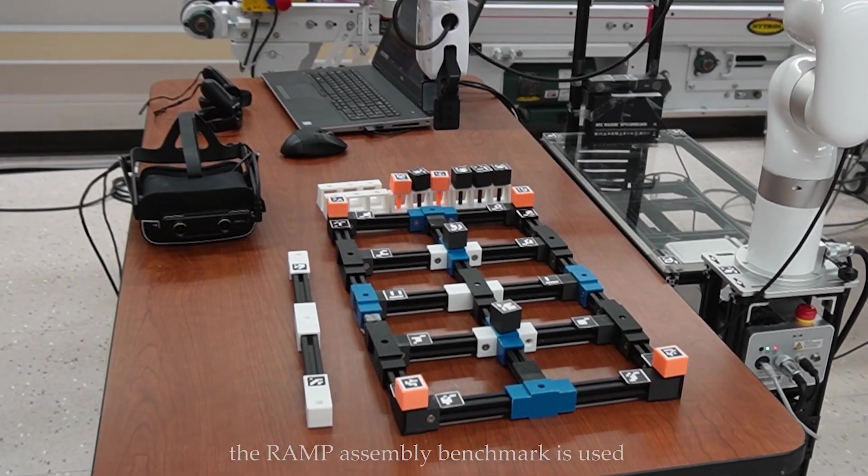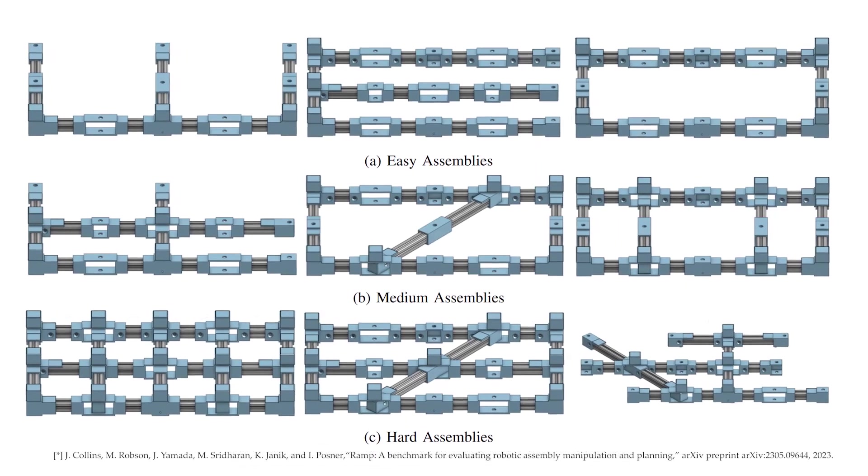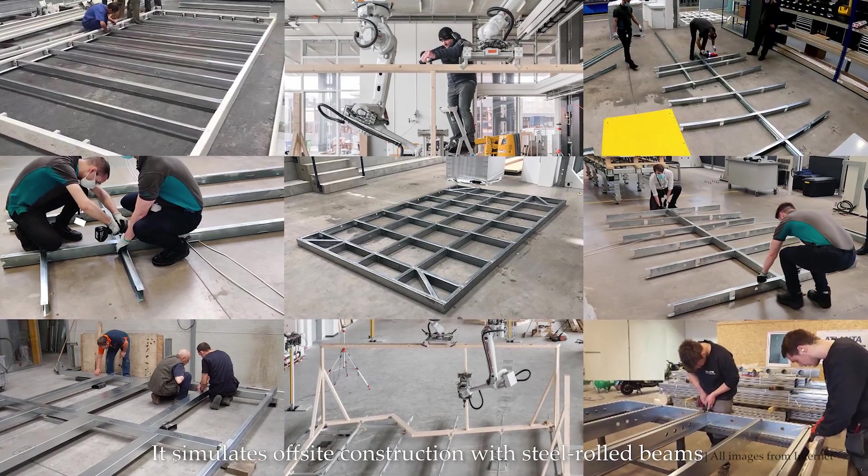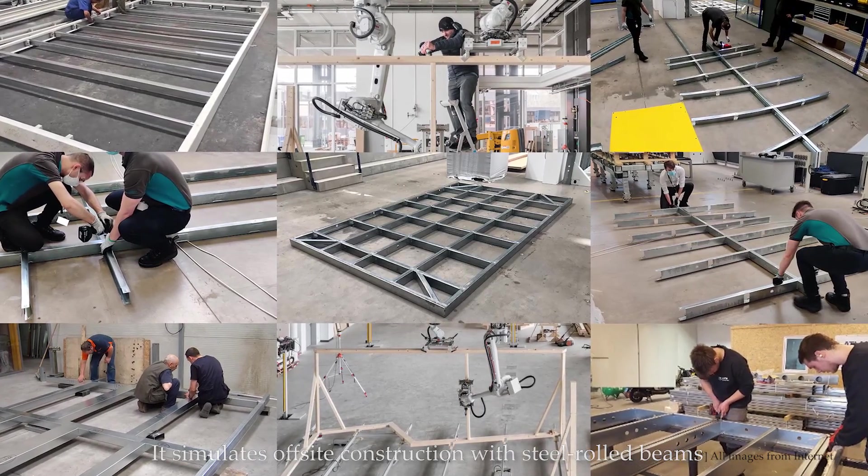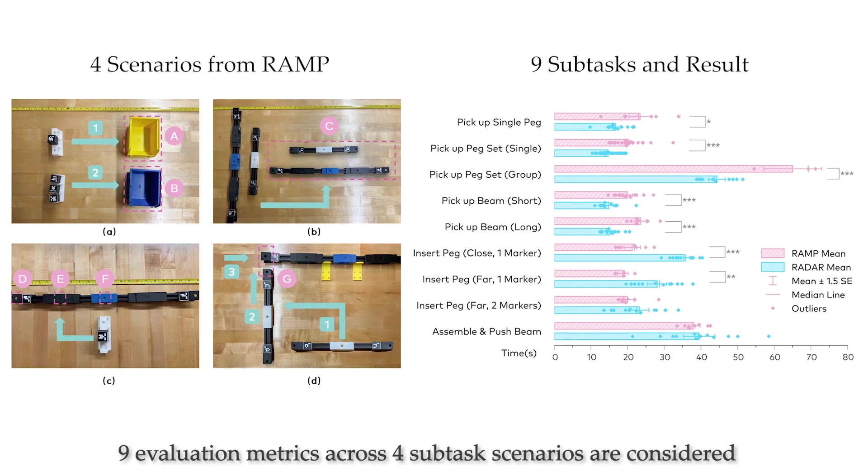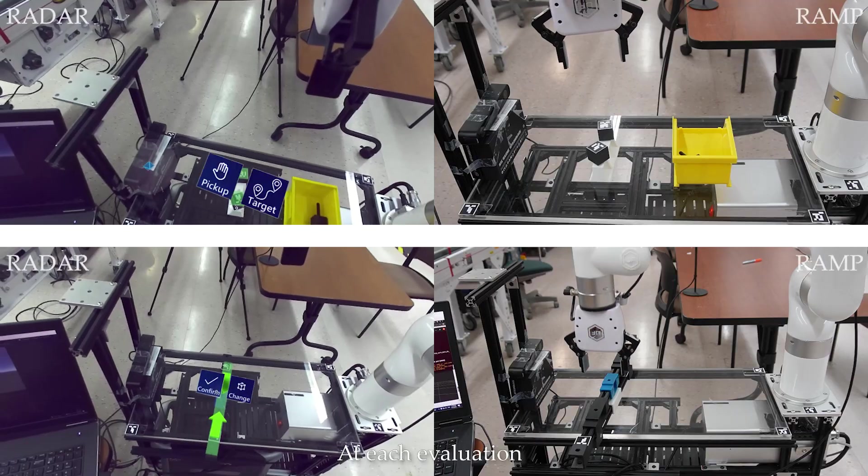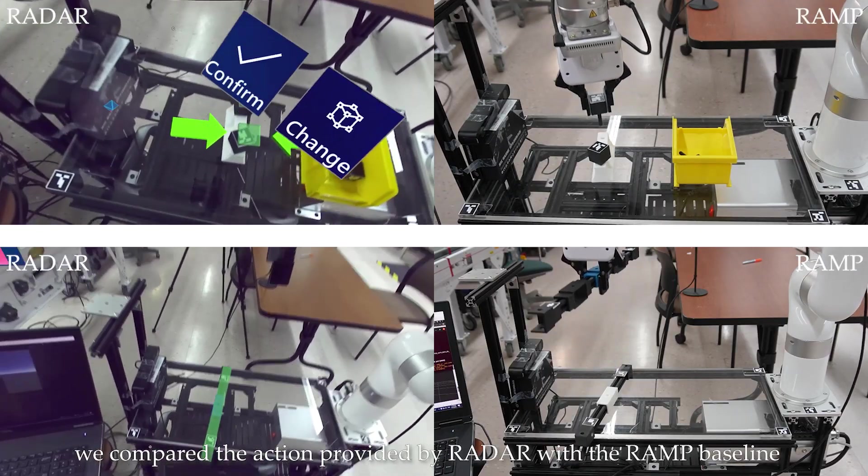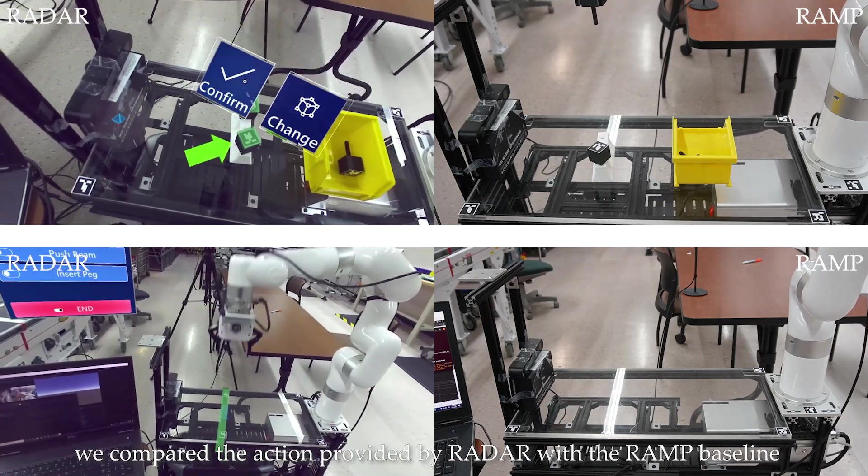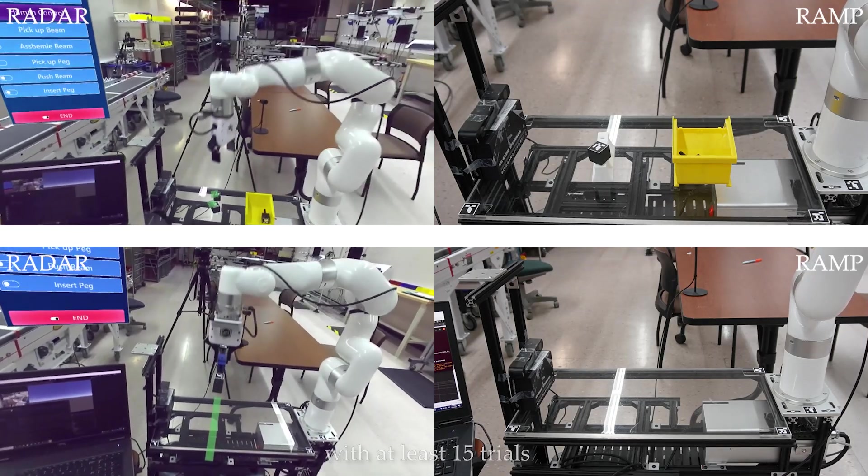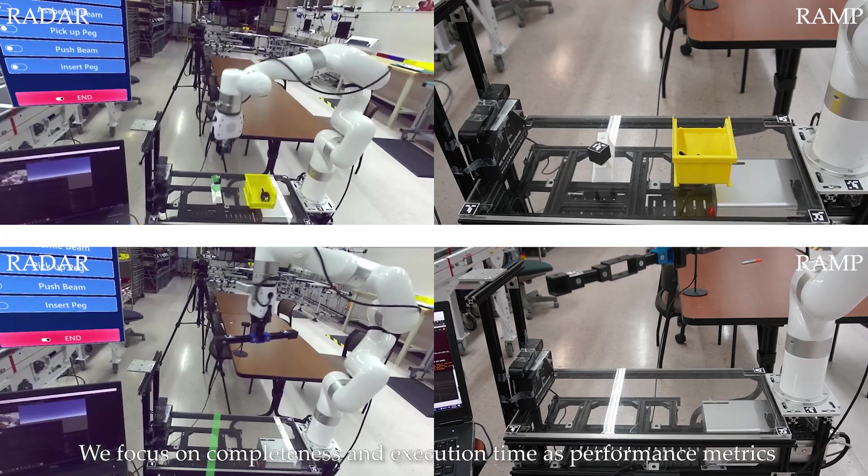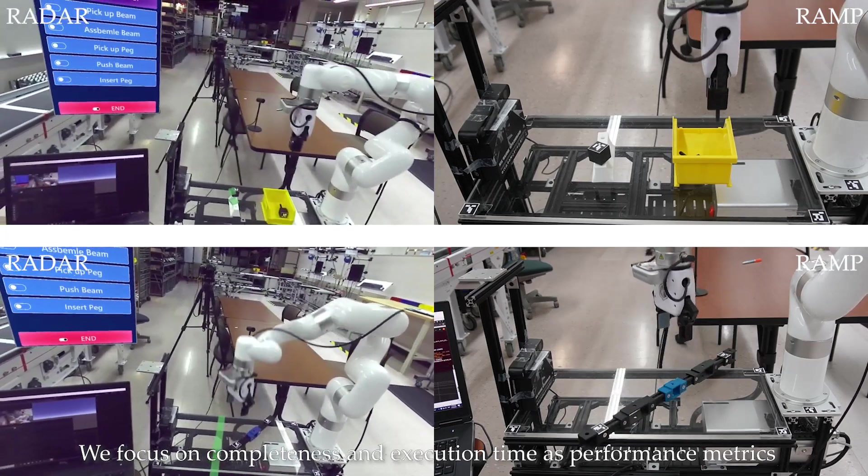To test the RADAR system, the RAMP assembly benchmark is used. It simulates off-site construction with steel rolled beams. Nine evaluation metrics across four subtask scenarios are considered. At each evaluation, we compared the actions provided by RADAR with the RAMP baseline with at least 15 trials. We focus on completeness and execution time as performance metrics.